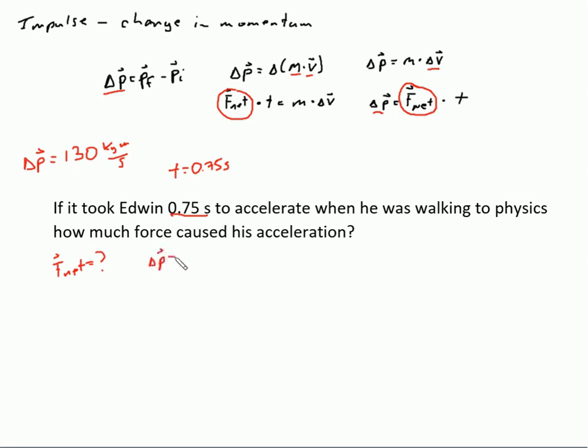So I'm going to use impulse equals the net force times the time. The impulse was 130 kilogram meters per second, and we're looking for the net force. We know the time is 0.75 seconds. So I can simply divide this side by 0.75 seconds, so these will cancel out. And I will get my net force. Calculate that out and we get 173.3 newtons.